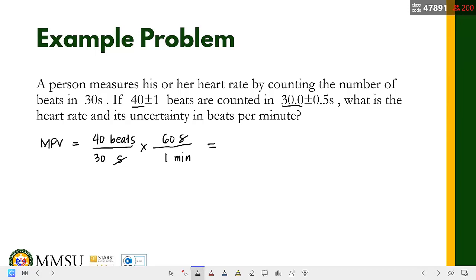So that's 40 times 60 divided by 30, so 80 beats per minute. Okay, yan na yung most probable value. Ngayon ang uncertainty - ano ang ginawa natin dito? Dinivide natin yung beats tsaka yung time. So for the uncertainty...